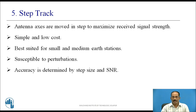In the case of step track, the antenna axes are moved in small incremental positions in order to maximize received signal strength. It is simple and low cost, and best suited for small and medium earth stations. However, this technique is susceptible to amplitude perturbations caused by signal fading. The accuracy of tracking is determined by step size and signal-to-noise ratio.